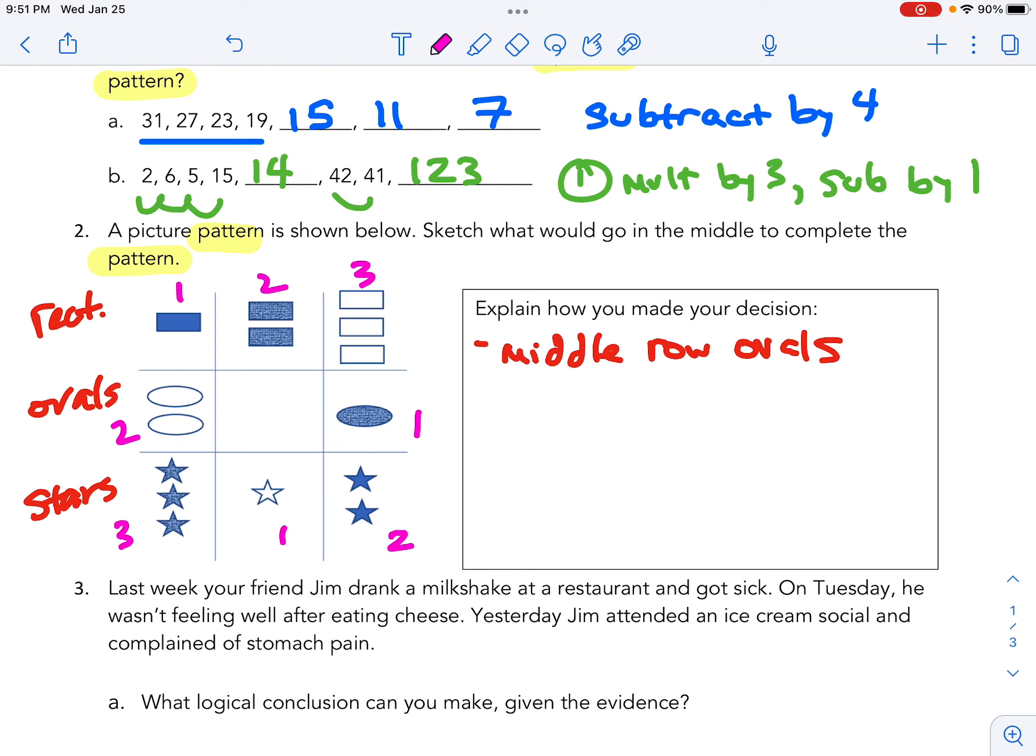The first row is rectangles, the second row is ovals, and the third row is stars. With that in mind, we know we need three ovals in the middle, which helps us establish what picture goes there.